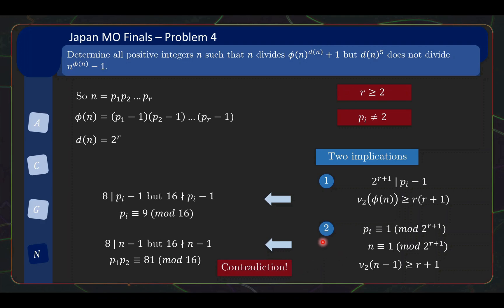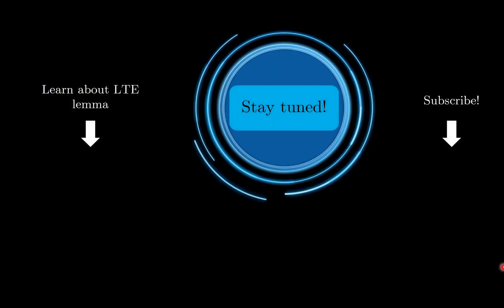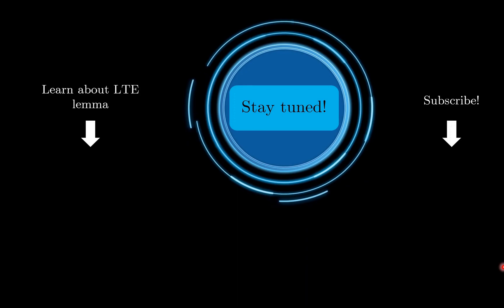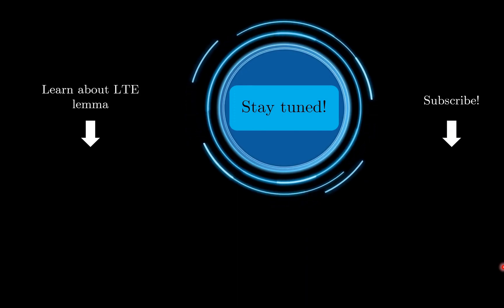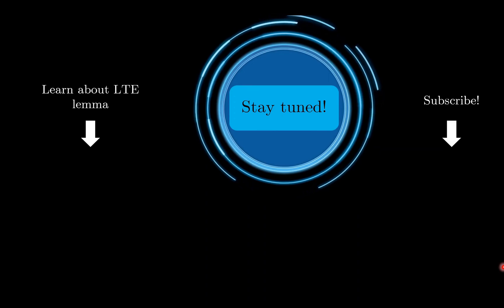So indeed, now we have no other solutions. The only solution was n equals to 2. So that's all for this video. And I hope you found this video really useful because it revealed quite a bit of concepts from number theory. And if you are not familiar with the LTE lemma, do check out the video shown on the screen right now. And stay tuned to the channel for more math videos. Subscribe, and see you soon.